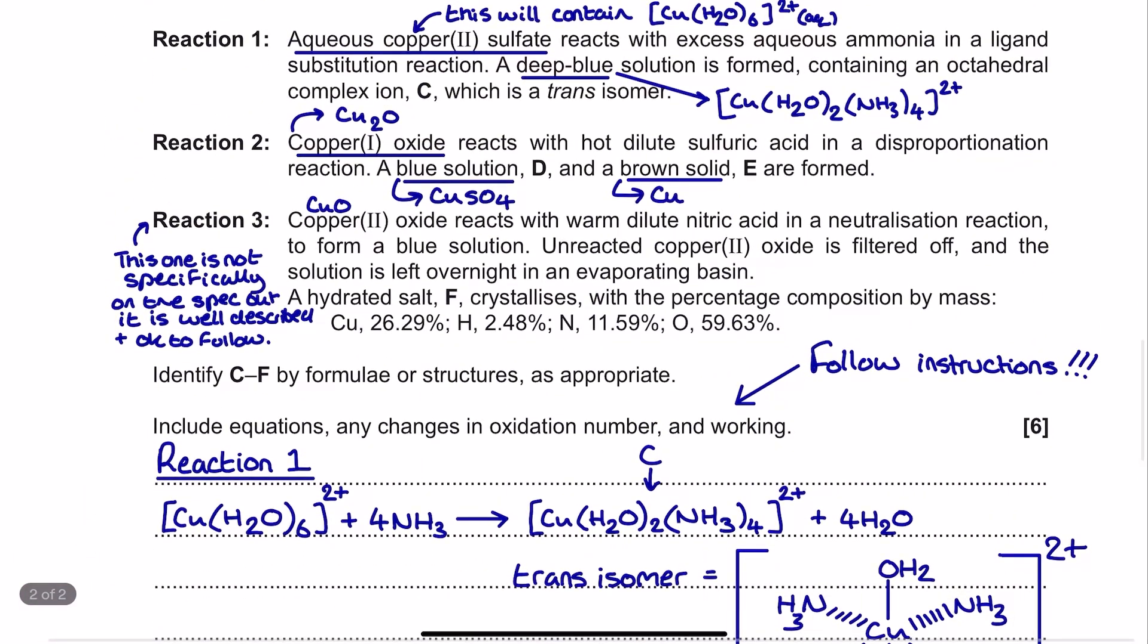Finally, here we move to reaction 3. This one is not specifically in the spec, but it is well described, and actually it's okay to follow. It's very similar to a lot of the things you meet in modules 3 and 2. So we've got the heat into constant mass idea of waters of crystallization, but also we've got copper 2 oxide, which is going to react in a very similar way to any of the group 2 metal oxides. And there's a lot of crossover here with different parts of modules 3 and 5. It's not impossible to follow what's going on here at all. Essentially, we have a reaction between an oxide and an acid, which makes a salt. And that salt then has a number of waters of crystallization associated with it, which then are evaporated away to leave us with an anhydrous salt. And we've been provided with loads of information here in order to help us analyze this substance.